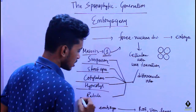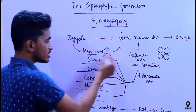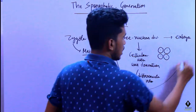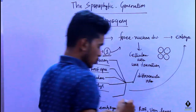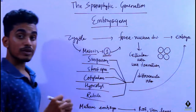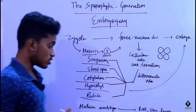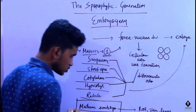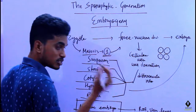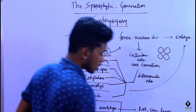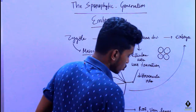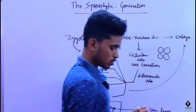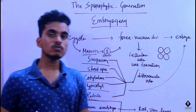Once the embryo is mature, the mature embryo will form roots, stem, and leaves. This was all about part two of reproduction in gymnosperms.